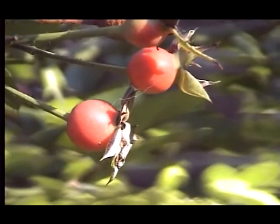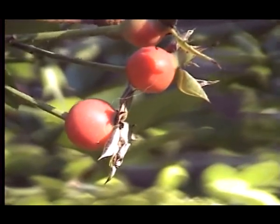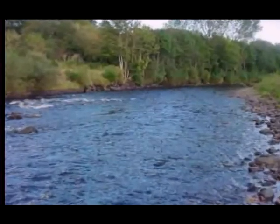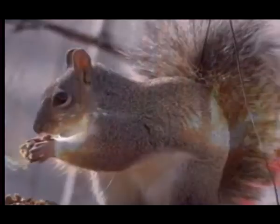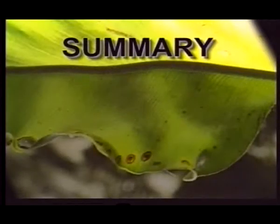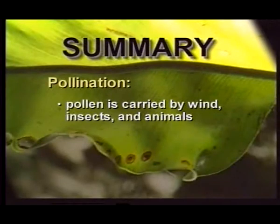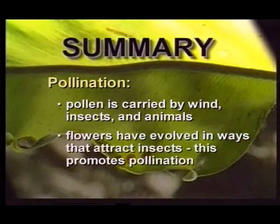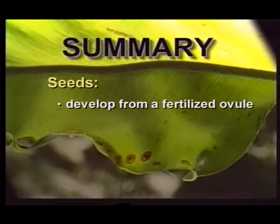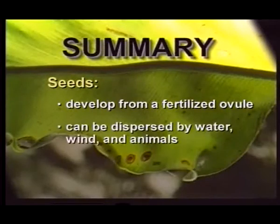Once seeds have matured, they can be dispersed in many ways — by wind, water, and animals. Pollen is carried by wind, insects, and animals. Flowers have evolved in ways that attract insects, which promotes pollination. Seeds develop from a fertilized ovule and can be dispersed by water, wind, and animals.